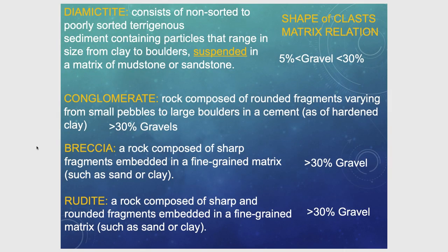A rudite is a rock composed of both sharp and rounded fragments — intermediate between a breccia (only angular) and a conglomerate (only rounded). If a specimen has both rounded and angular clasts and you cannot determine which it is, call it a rudite. A diamictite has much less gravel — less than 30% but more than 5% — with most gravel suspended in a matrix of either mudstone or sandstone depending on maturity.